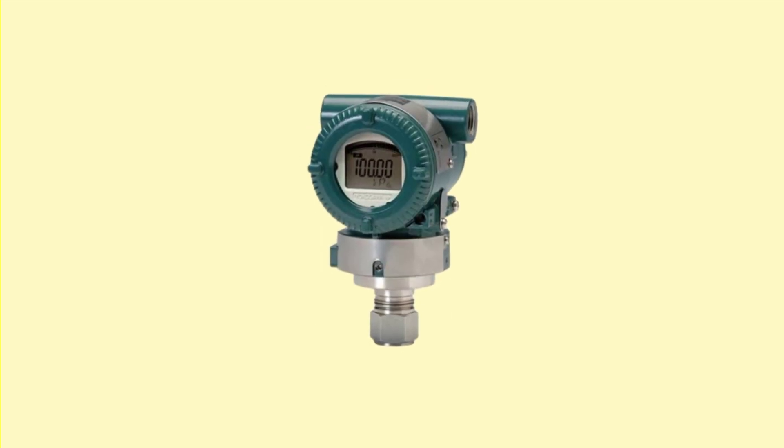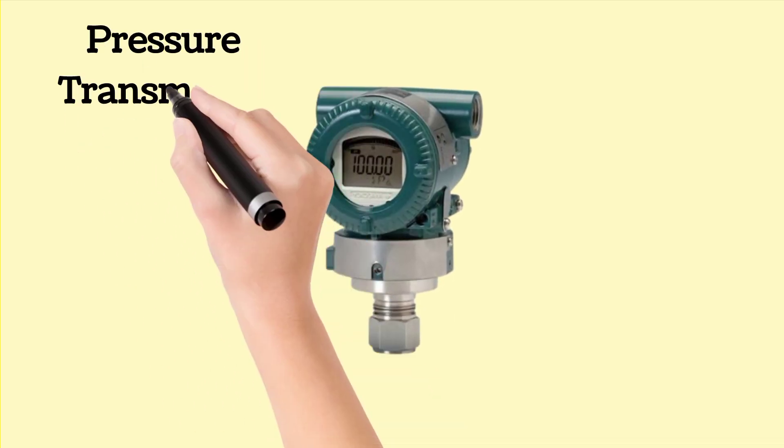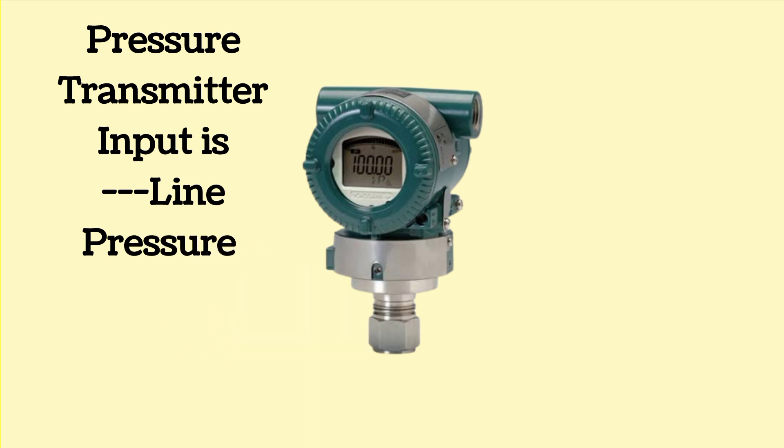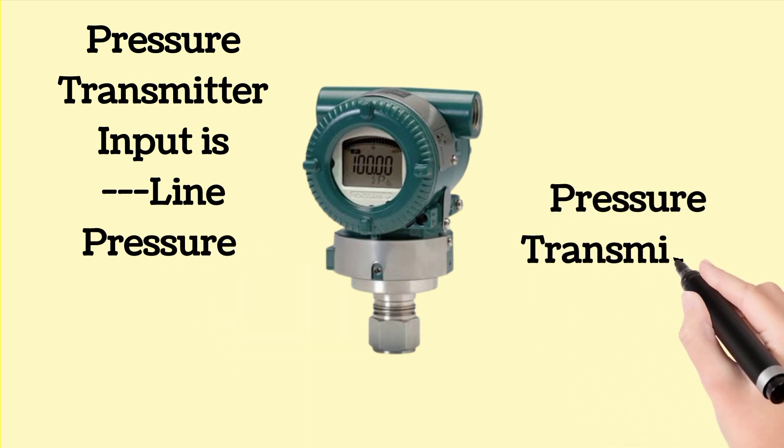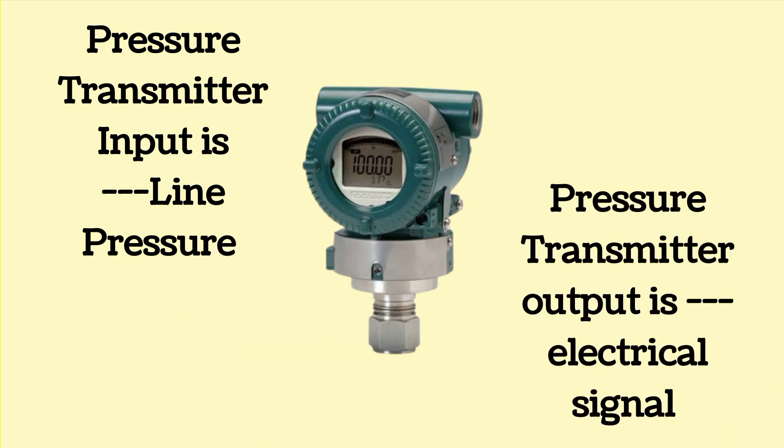The input for pressure transmitter is line pressure and the output of pressure transmitter is an electrical signal.